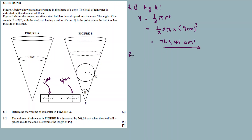Now 8.2 is about Figure B — five marks. The volume of rainwater in Figure B is increased. So it means the volume now includes the sphere placed inside the cone.